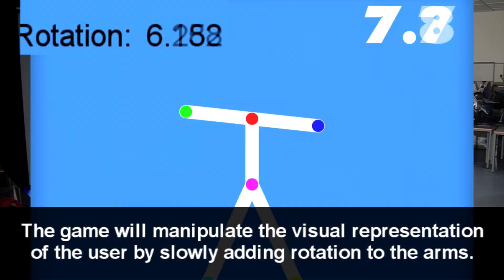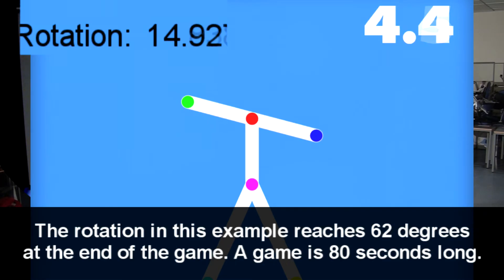The game will manipulate the visual representation of the user by slowly adding rotation to the arms. The rotation in this example reaches 62 degrees at the end of the game. A game is 80 seconds long.